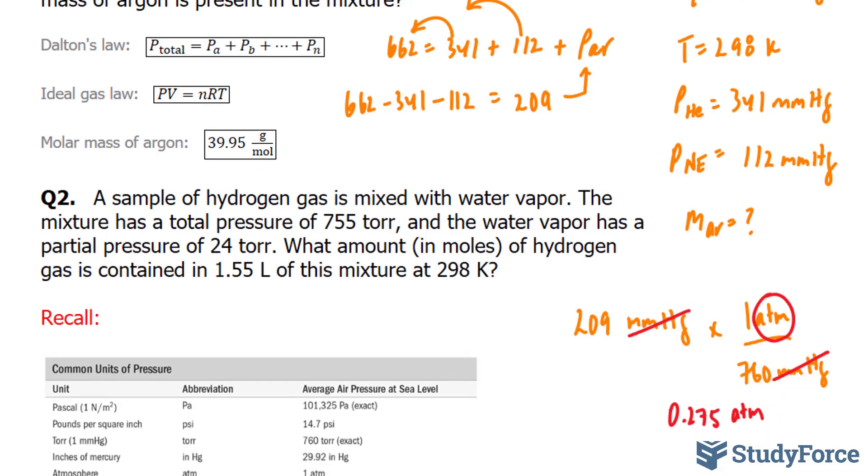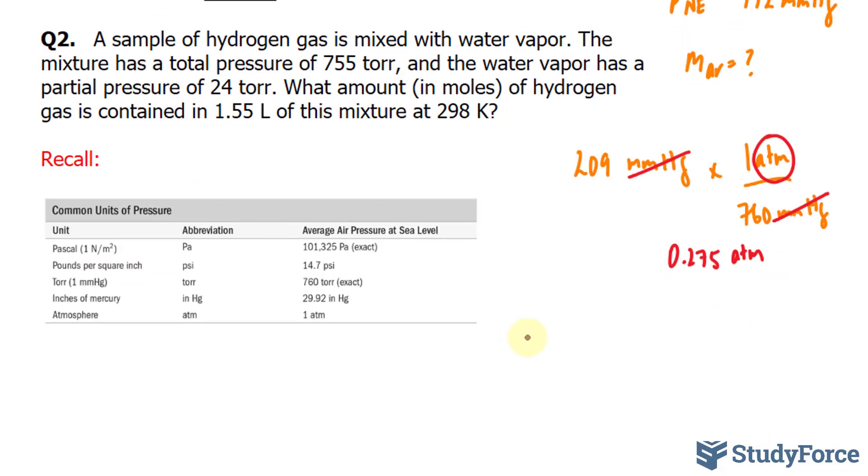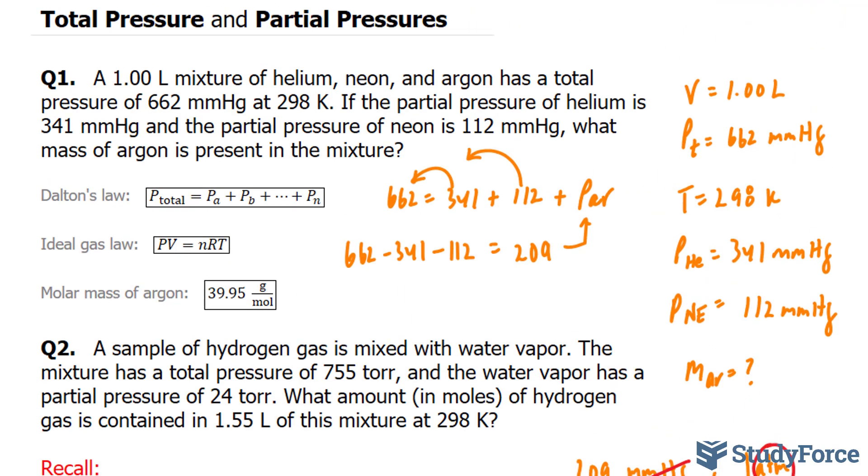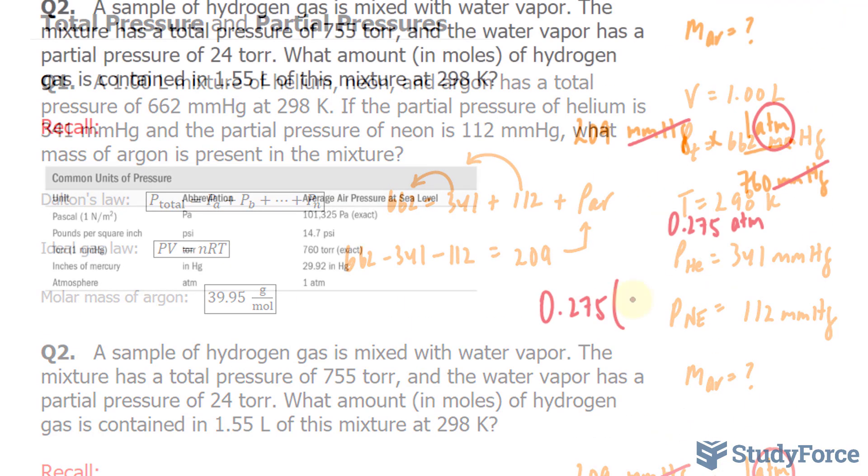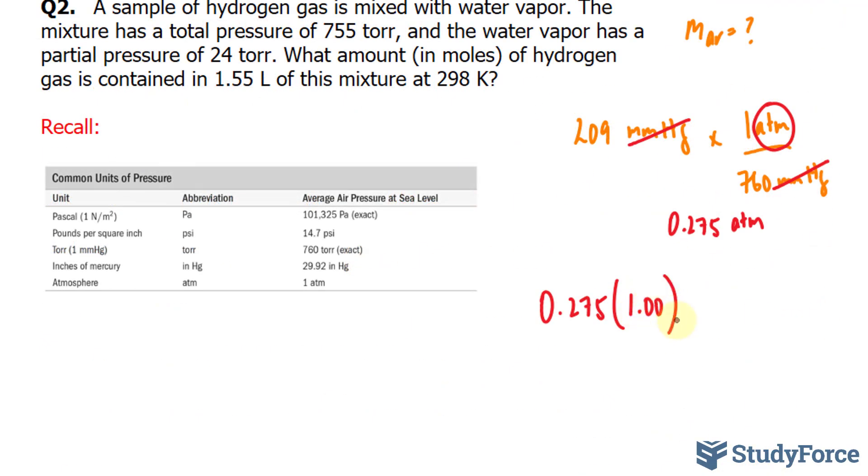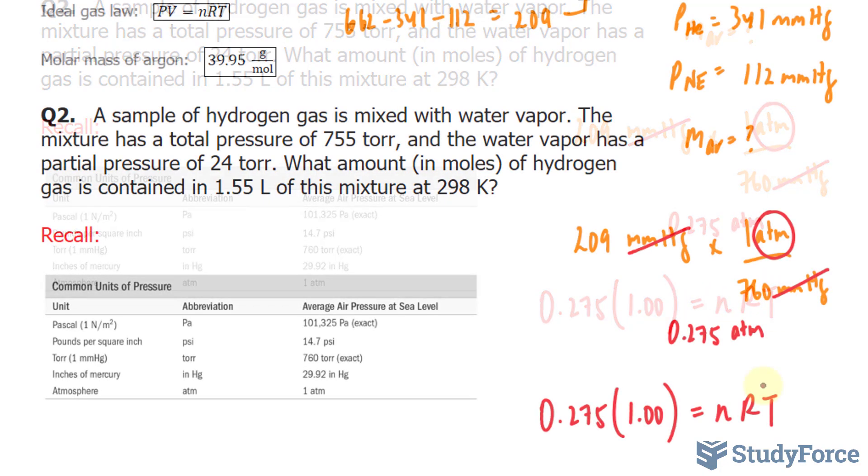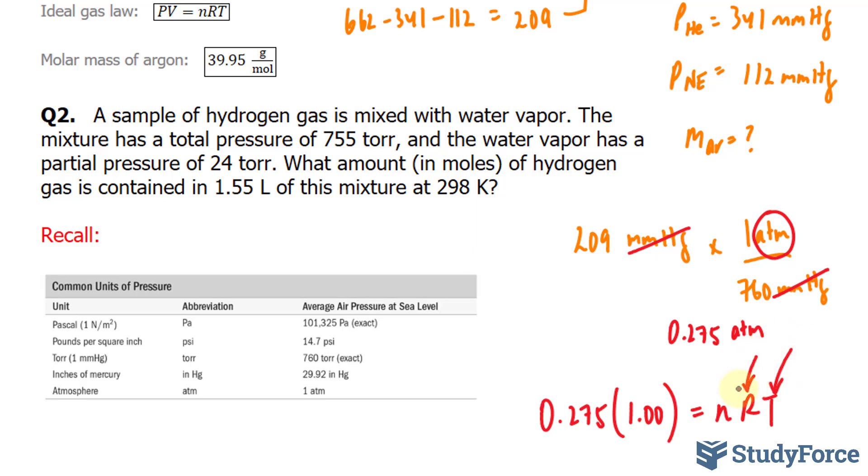So I'll set up my equation where I have PV is equal to nRT. This is my P value, 0.275. My volume is equal to 1 liter, 1.00, and this is equal to nRT. I know the temperature. I know what R is equal to.